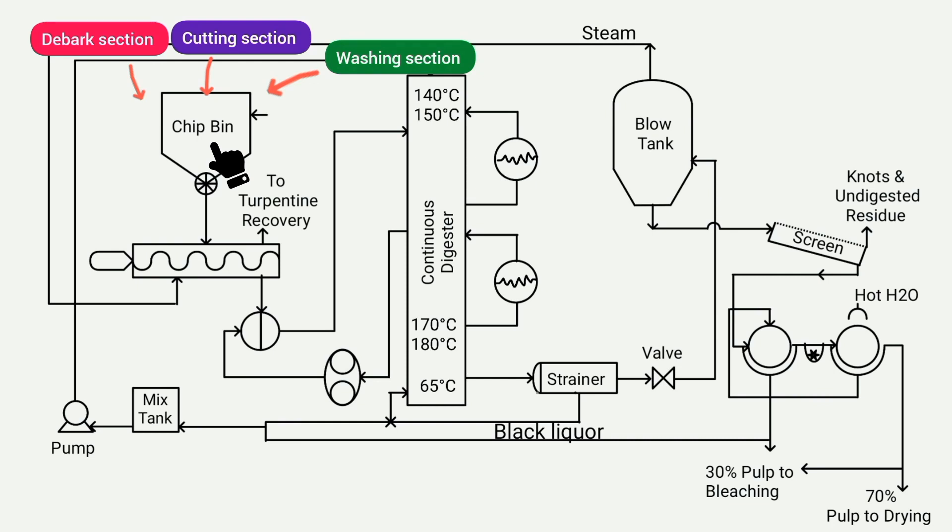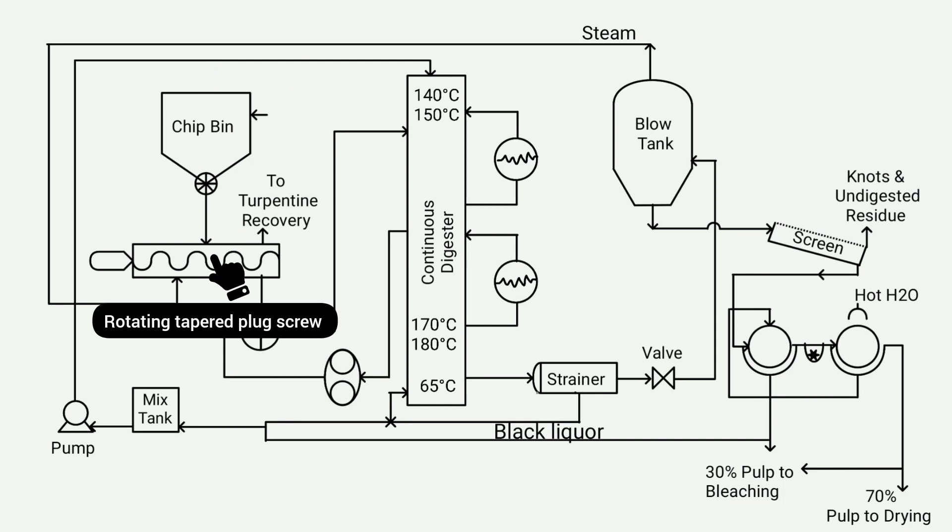Next is the rotating tapered plug screw, which preheats the wood chips, removing the oil content known as turpentine present in the wood chips, and sends them continuously to the digester without any flow gap or break.